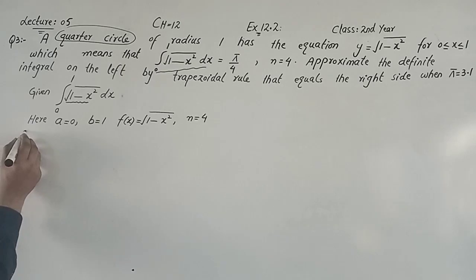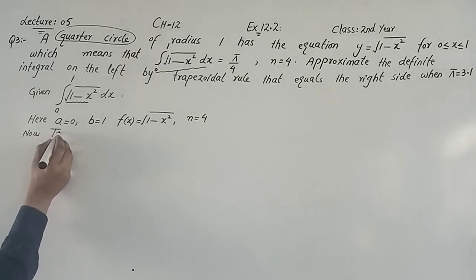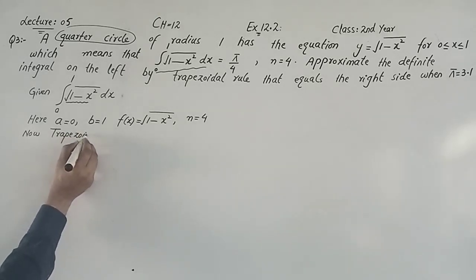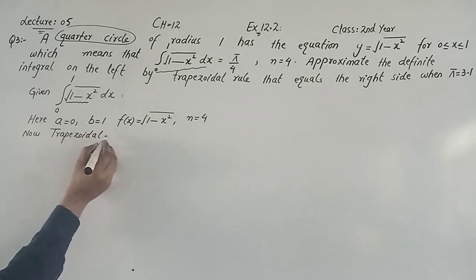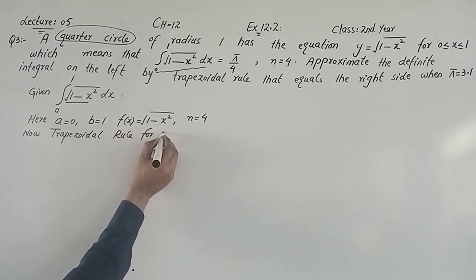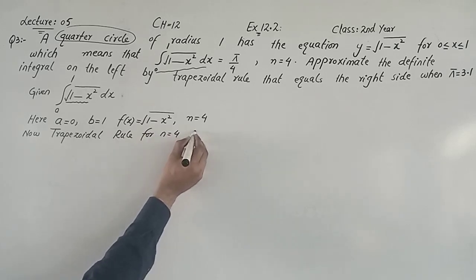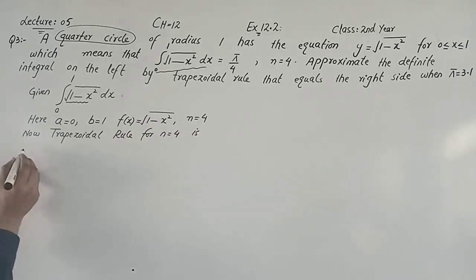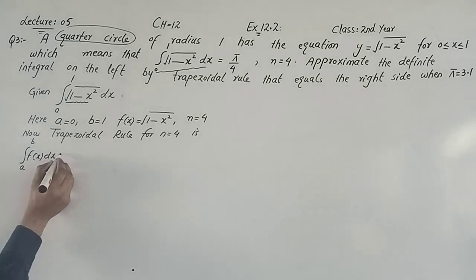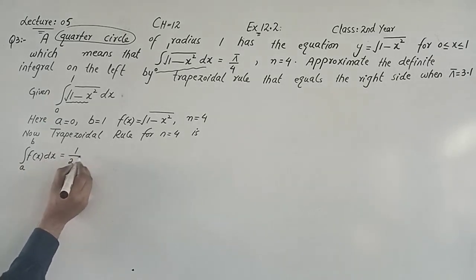Now the trapezoidal rule for n equal to 4: the integral of f(x) dx is equal to (1/2) Δx times [f(x₀) + f(x₄) + 2·f(x₁) + 2·f(x₂) + 2·f(x₃) + f(x₄)].